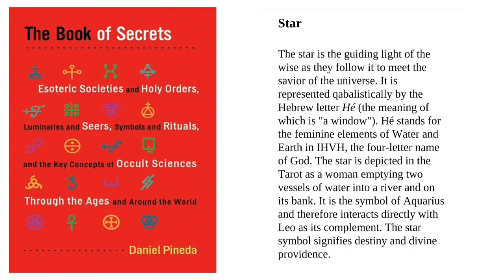Star. The star is the guiding light of the wise, as they follow it to meet the saviour of the universe. It is represented cabalistically by the Hebrew letter HE, the meaning of which is a window. HE stands for the feminine elements of water and earth in IHVH — the four-letter name of God. The star is depicted in the tarot as a woman emptying two vessels of water into a river and on its bank. It is the symbol of Aquarius and therefore interacts directly with Leo as its complement. The star symbol signifies destiny and divine providence.